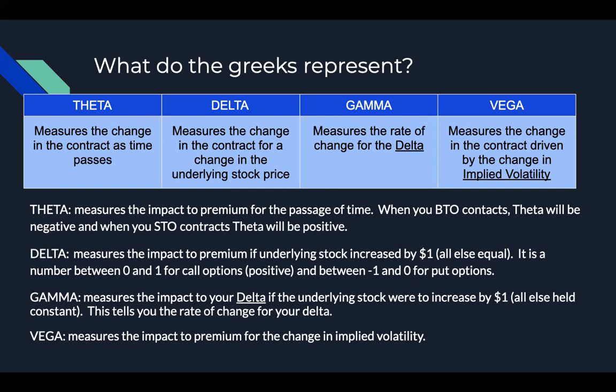Delta essentially measures the change in the contract for a corresponding $1 change in the underlying stock price. For calls, delta will be between zero and one. For puts, delta will be between negative one and zero, because it's honed in on that increase by $1. A put is not going to have a positive delta because if the stock increases by $1, the option price wouldn't improve — it would actually get worse for your buy-to-open put option.